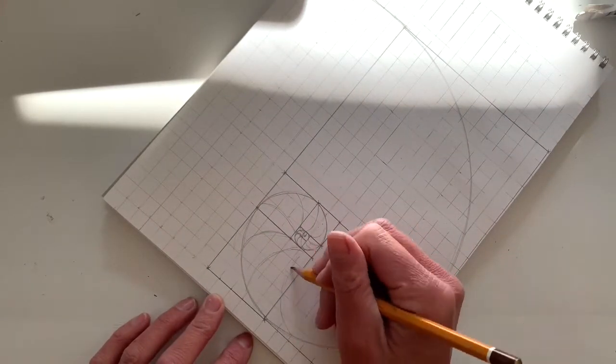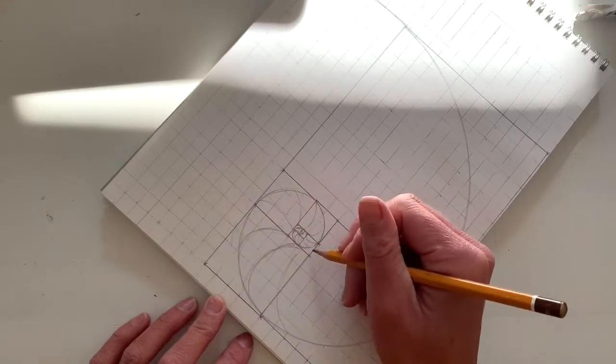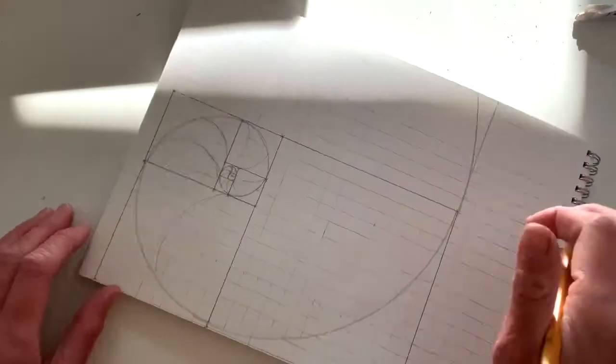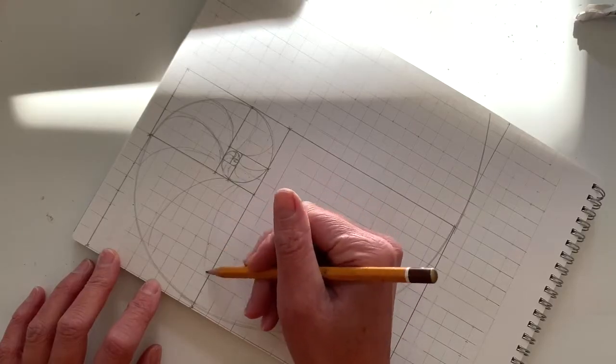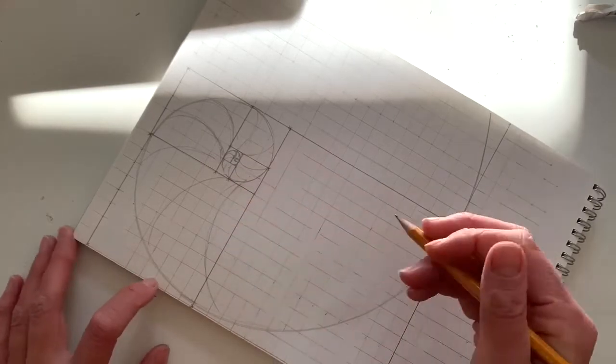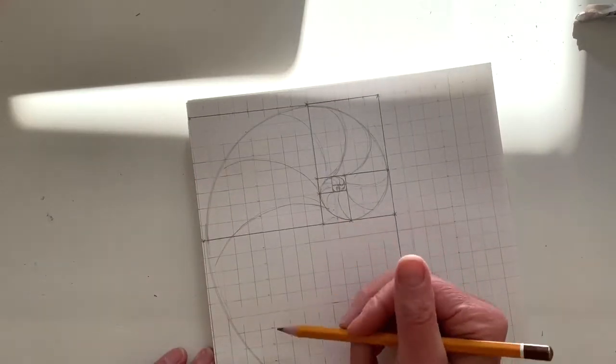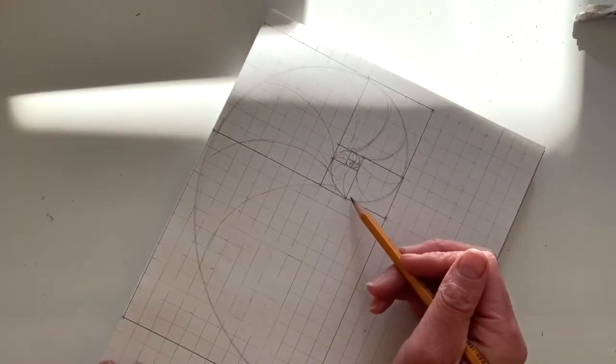You want to make sure these C sections are spreading further apart the wider you go around the shell, so as the shell spiral widens, so do your curved shapes. Now this is going back to using our contour lines in order to create shape, so showing the curve is going to make the spiral look like it's curved and not flat.